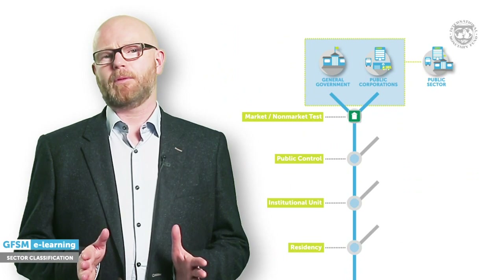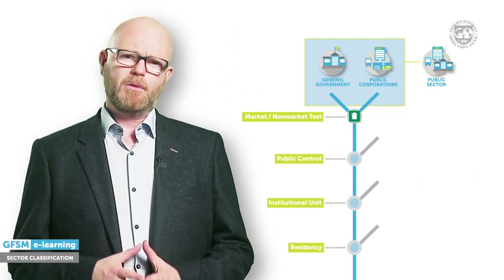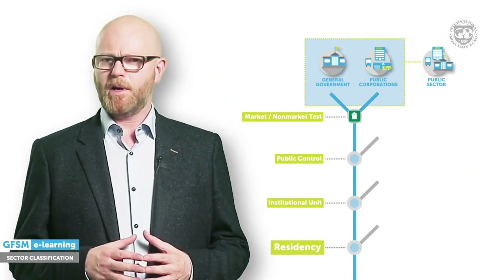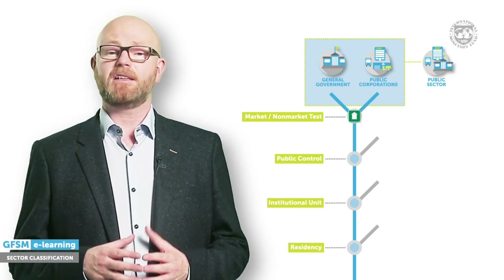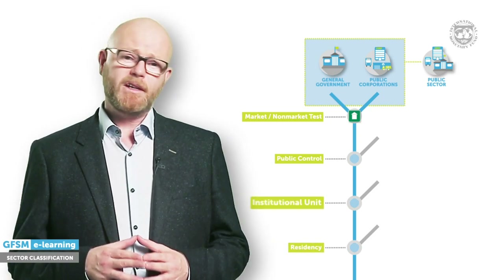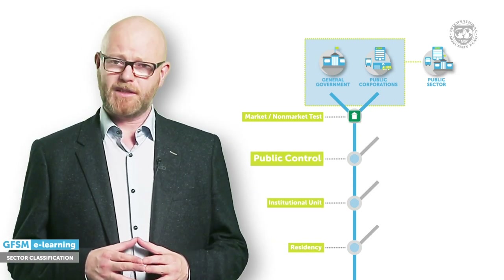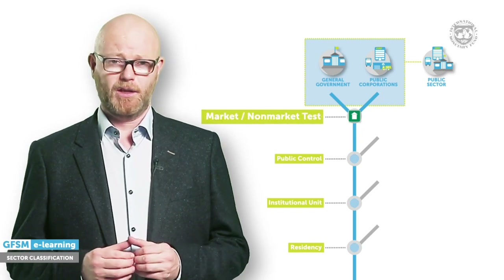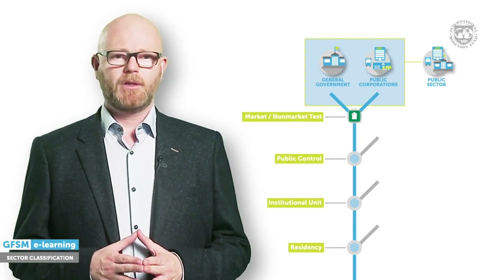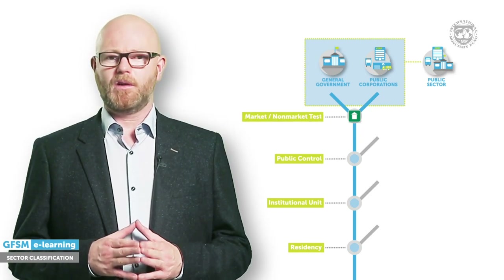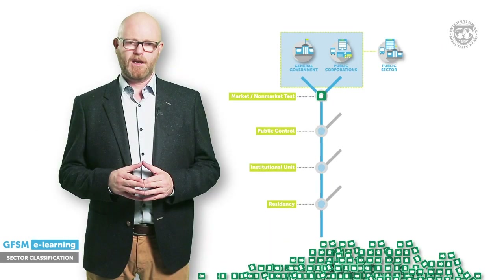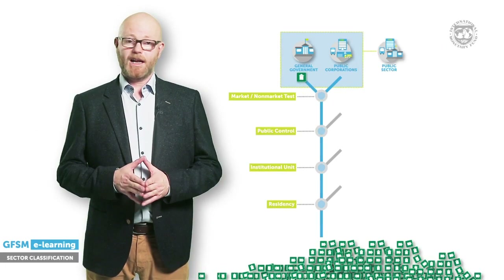Let's recap. Using the decision tree, we can decide whether an entity is a resident unit, whether it qualifies as an institutional unit, whether it is within the public sector, and whether it is a market or non-market unit. This is how we determine which units belong to the general government sector and the public sector. One down, 9,999 to go.